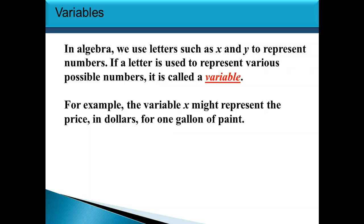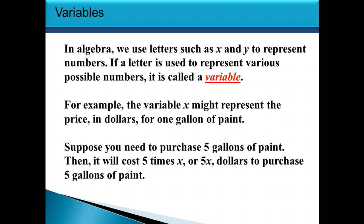So for example, the variable x might represent the price in dollars for one gallon of paint. Suppose you need to purchase five gallons of paint. Then it will cost you five times the cost of one gallon of paint, so that would be 5x dollars to purchase five gallons of paint.